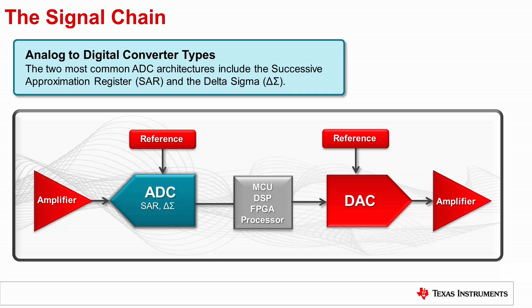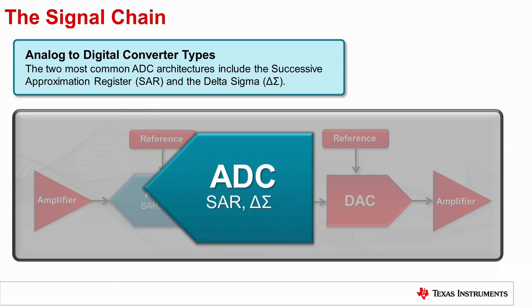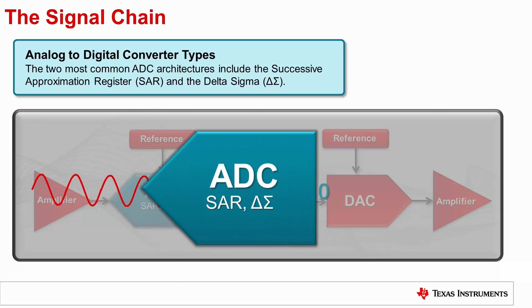A typical signal chain includes amplifiers, references, analog to digital converters, and digital to analog converters. The ADC's key task is to take analog signals and convert them to digital bits that are read, processed, or manipulated by a host processor or an FPGA.